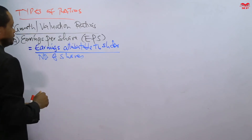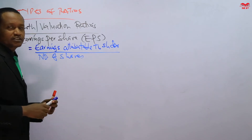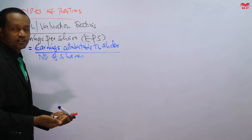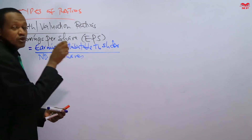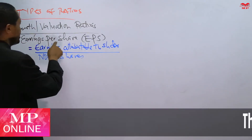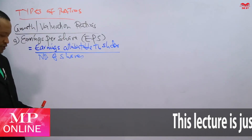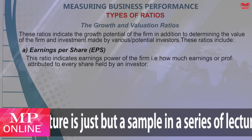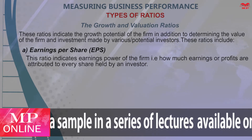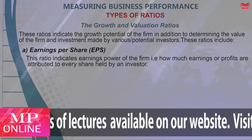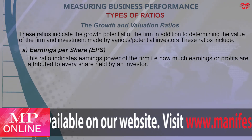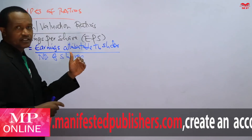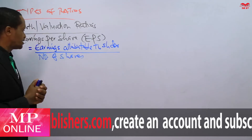So earnings per share — you simply take the earnings after tax, the earnings attributable to the shareholders, the profit after deducting tax and interest, so that the remaining amount which is attributable to the ordinary shareholders, you divide by the number of shares. That gives you the earnings per share. The EPS indicates the earnings power of the firm — that is, how much earnings or profits are attributable to every share held by an investor. The higher the EPS, the better.